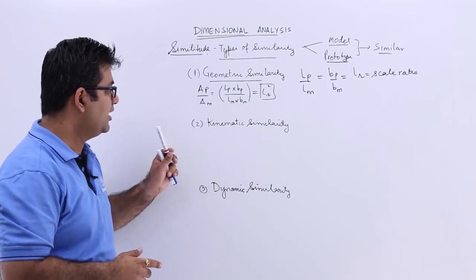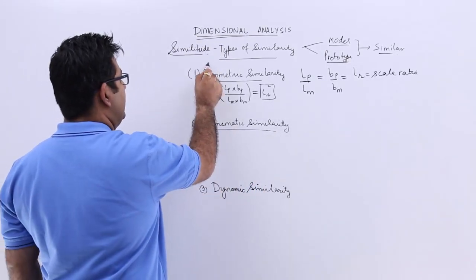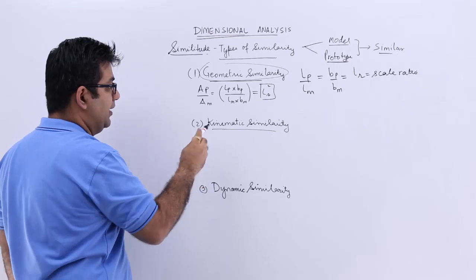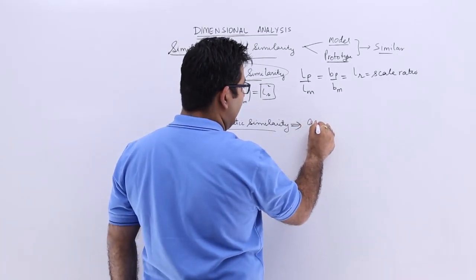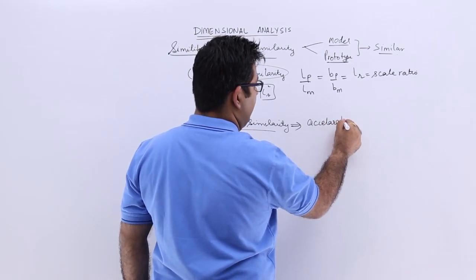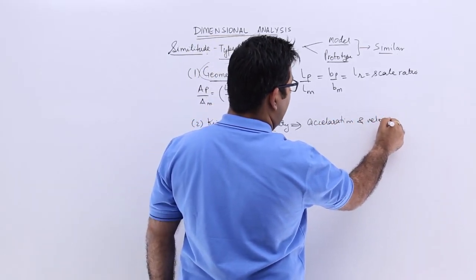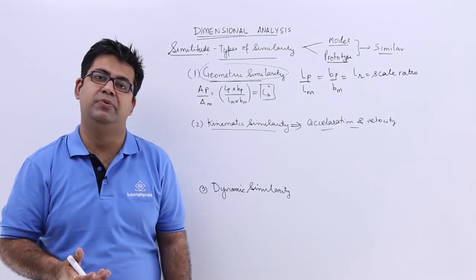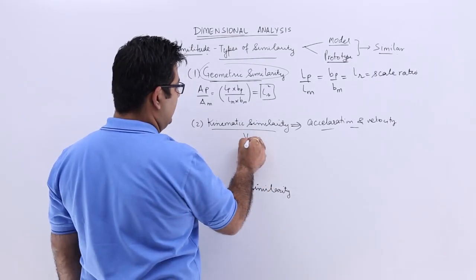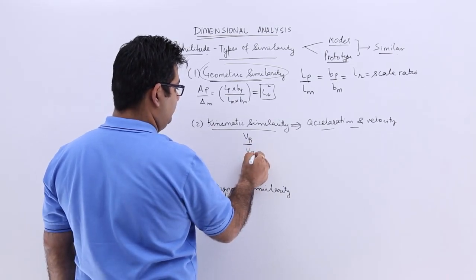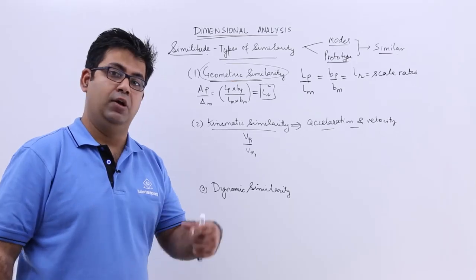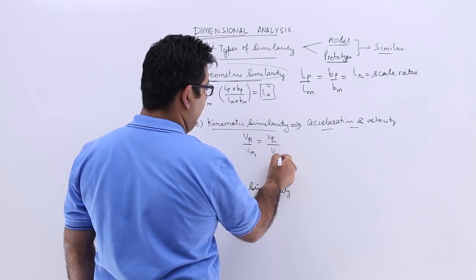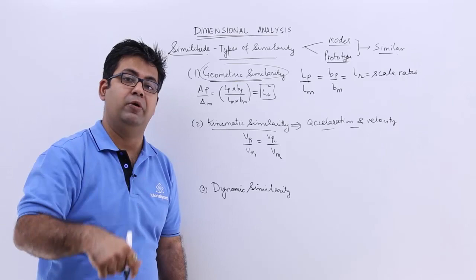Now let us come to the second kind of similarity, that is kinematic similarity. In geometric similarity we talk about the similarity of the dimension, whereas in kinematic similarity we talk about the similarity of acceleration and velocity. Now because these two are vectors, the magnitudes have to be same, also the direction has to be the same. So the velocity at point 1 in a prototype upon the velocity at point 1 on a model has to be in the same ratio as the velocities on point 2 on proto and model.